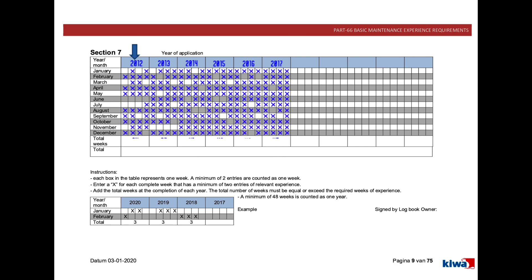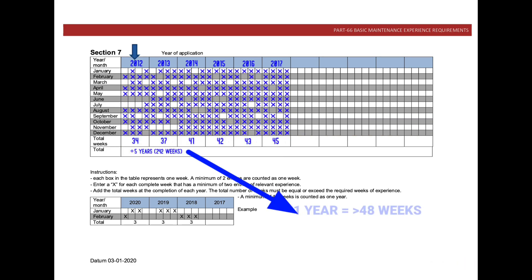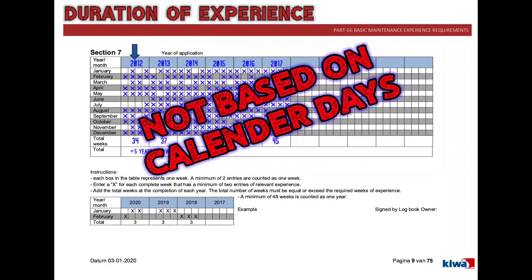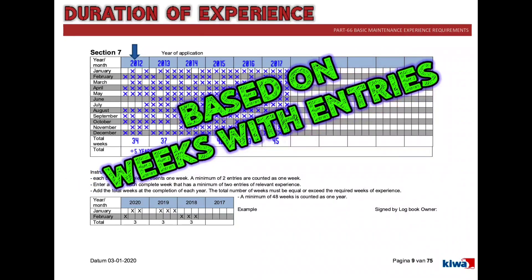After completing one whole year, count the number of X's — the number of weeks with entries — and write the total weeks over the year. The minimum of 48 weeks is counted as one year. So for one year you need 48 total weeks; for two years, 96 weeks; three years, 144 weeks; four years, 192 weeks; and for five years you need more than 240 weeks of entries. Duration of experience is based on the number of weeks with tasks performed, not on dates.